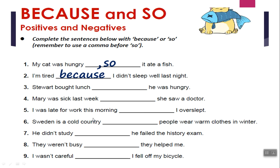I was late for work this morning. I overslept. There is a reason — they are giving me the reason why he was late. So for sure I will use 'because'. Next: Sweden is a cold country. People wear warm clothes in winter. Is it a result or a reason? It's a result. People wear warm clothes as a result of the weather, because the weather is cold. So I will use 'so': Sweden is a cold country, so people wear warm clothes.